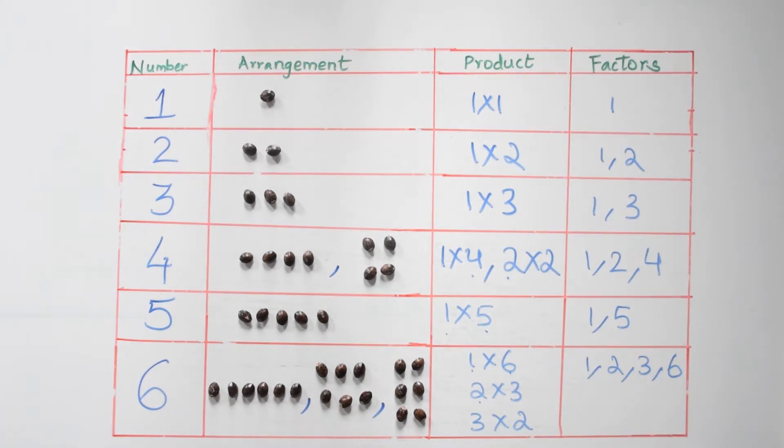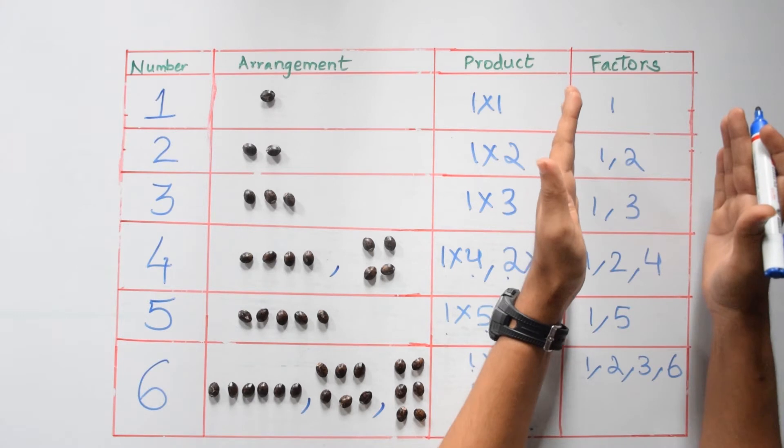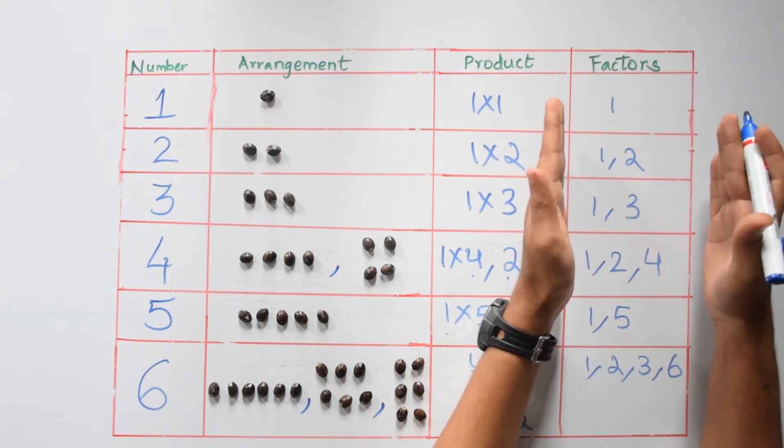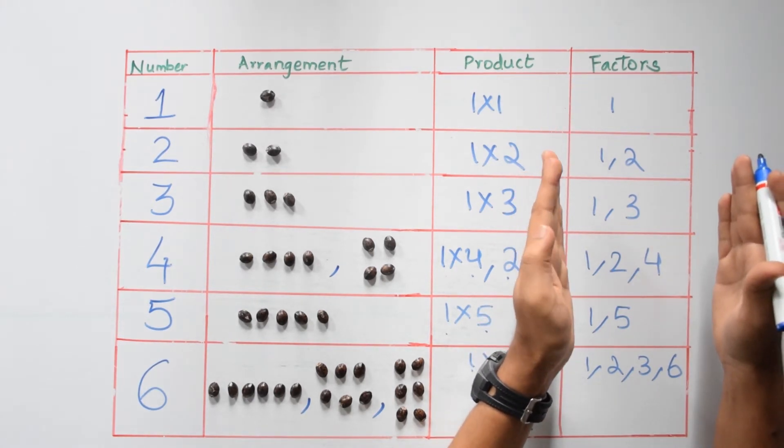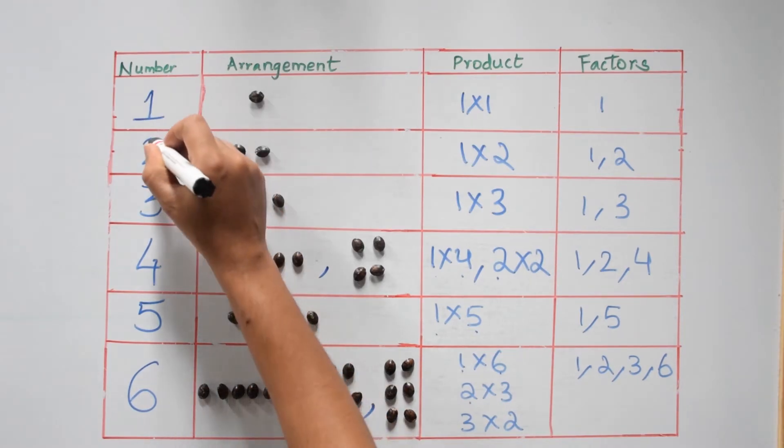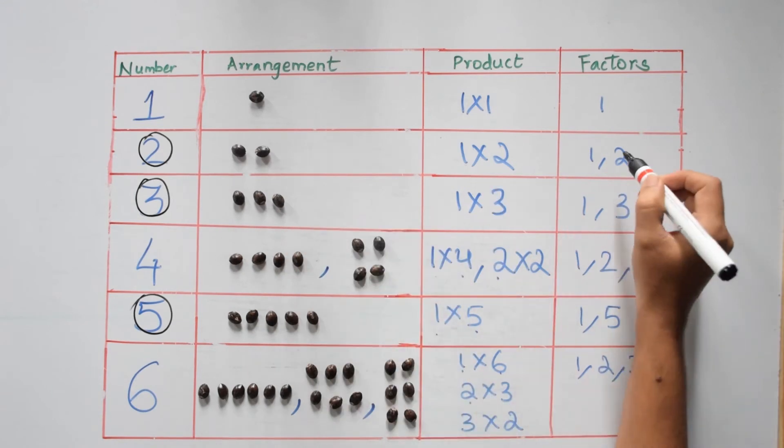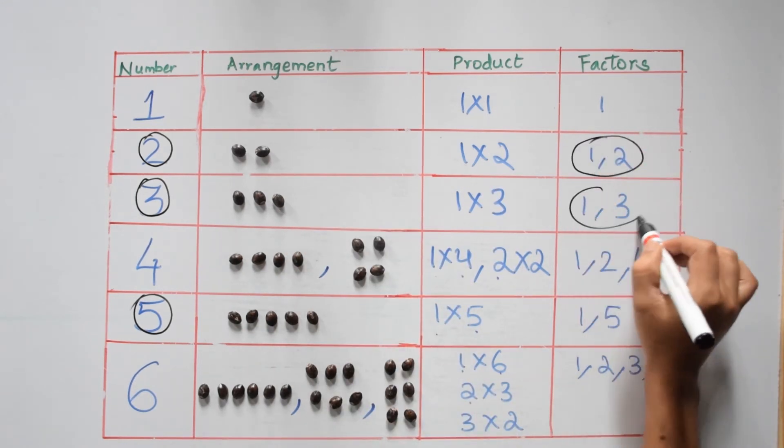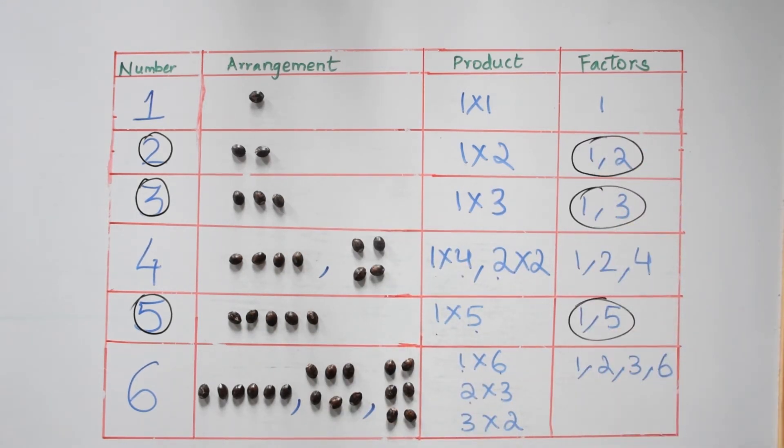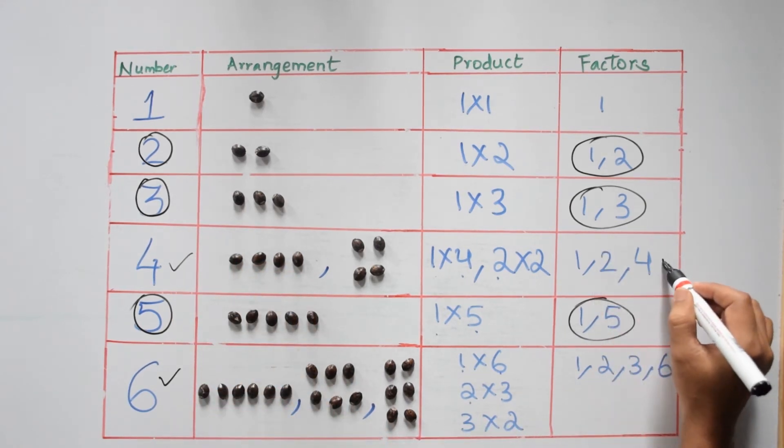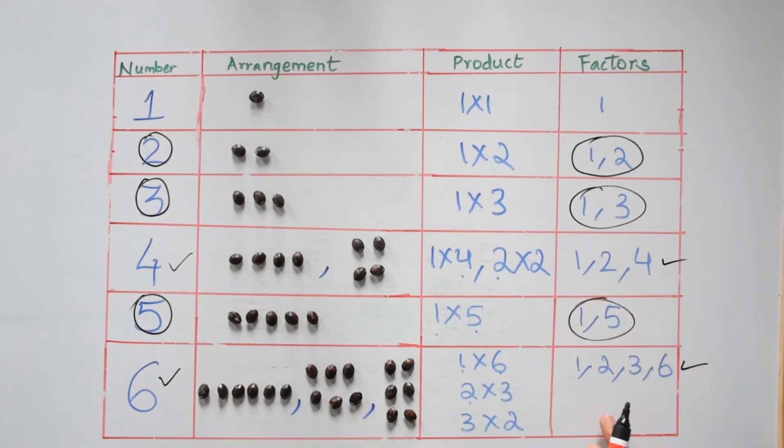Now let's just focus only on the factors column. Looking at the factors column, what do we discover? Pause the video, note your observation and come back to the video. Numbers two, three, and five have only two factors. Numbers four and six have more than two factors.